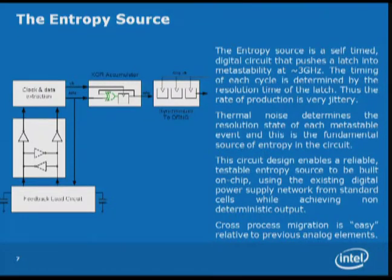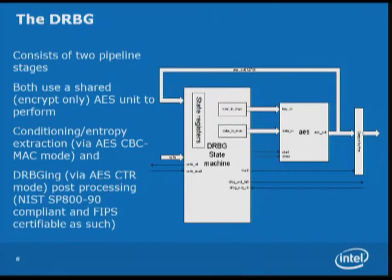To keep an entropy source centered on its curve, we have a feedback circuit that drives some bias on the devices in the differential latch to keep the circuit centered — mostly to compensate for manufacturing anomalies across that differential latch. This makes cross-process migration easier because it's essentially a digital circuit requiring only a small amount of hand layout per process. The DRBG uses an encrypt-only, very small AES unit and does entropy extraction via an AES CBC-MAC construct. Using the same AES unit in counter mode with different scheduling, it gives NIST SP-800-90 outputs.